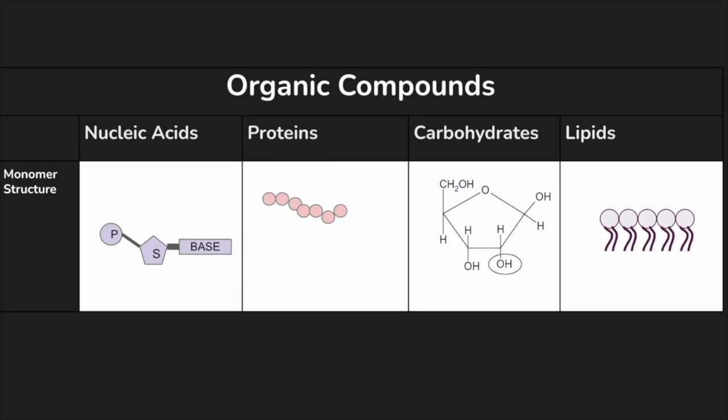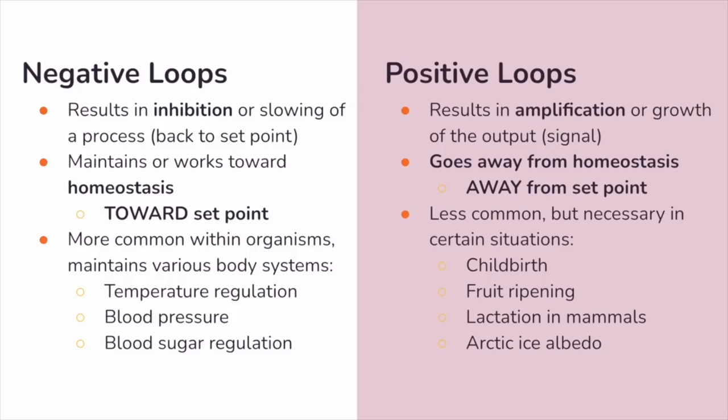Organisms use feedback loops to maintain their internal environments and respond to changes. Feedback loops help organisms regulate homeostasis, and failure to maintain homeostasis can cause disease or death. Negative feedback loops are very common, resulting in the slowing of a process or getting something back to a set point, like blood pressure, blood sugar regulation, or temperature regulation. Positive feedback loops are an amplification of a particular output or signal, going away from homeostasis, like increased contractions during childbirth or ripening of fruit.